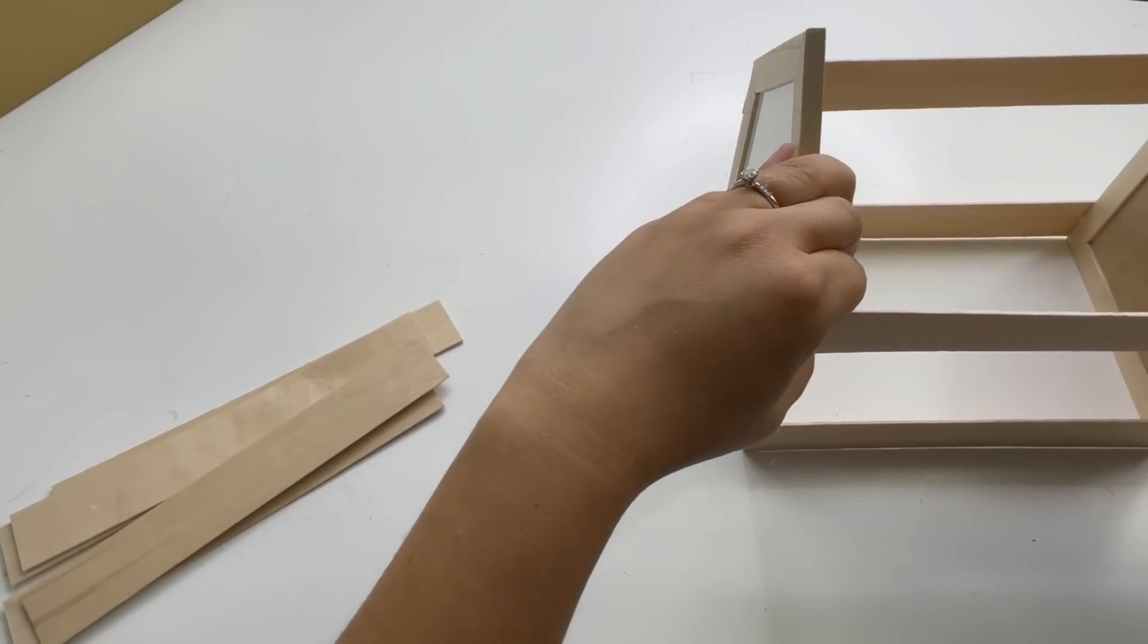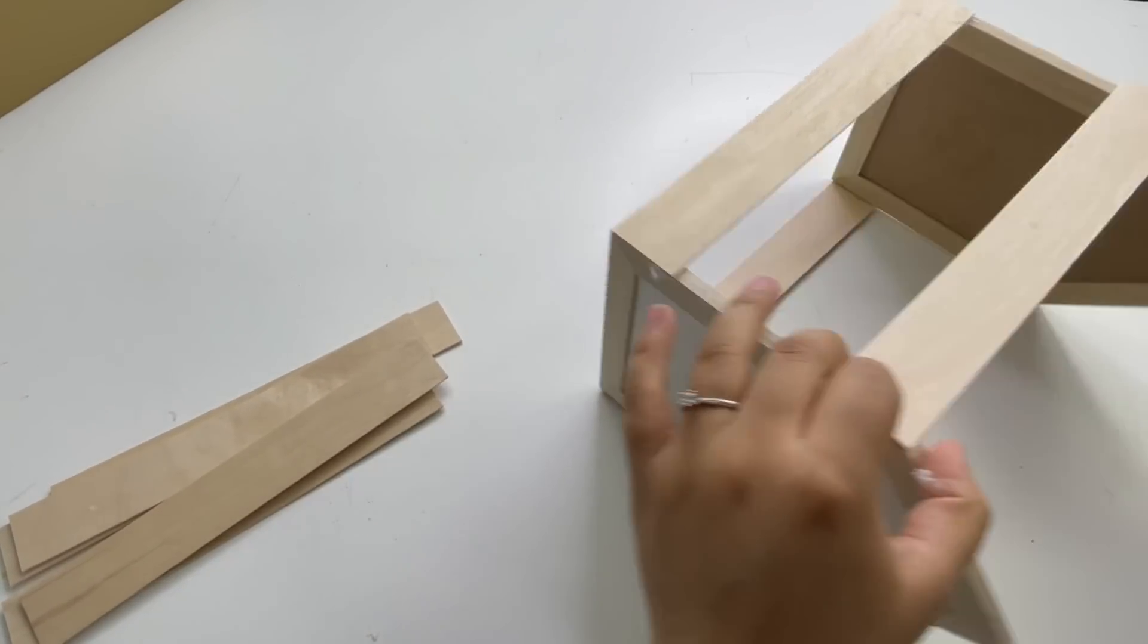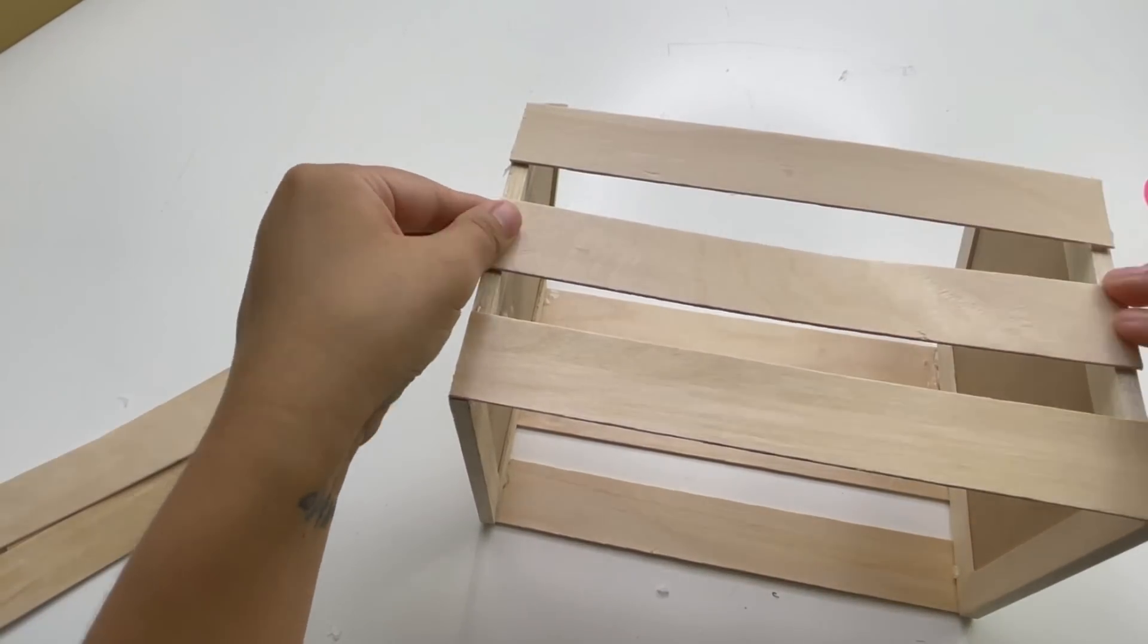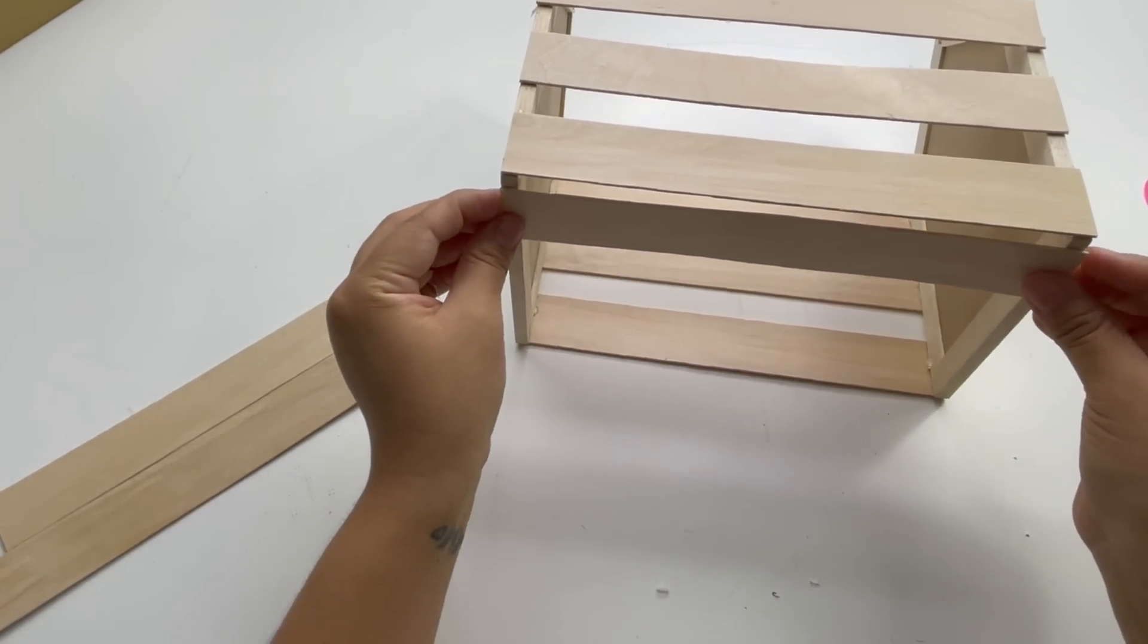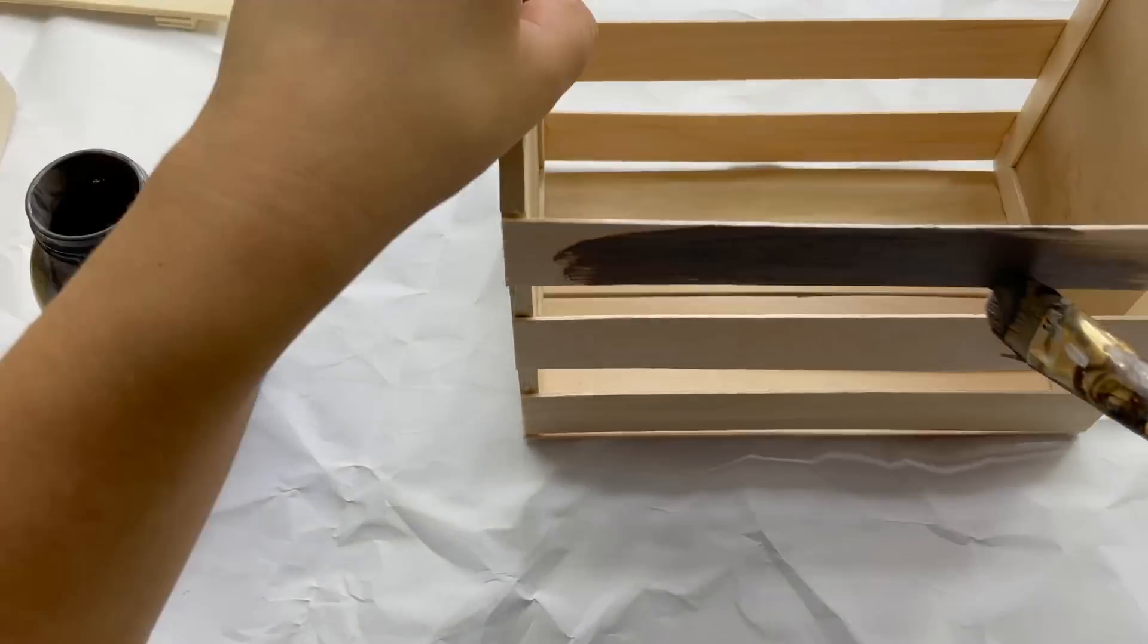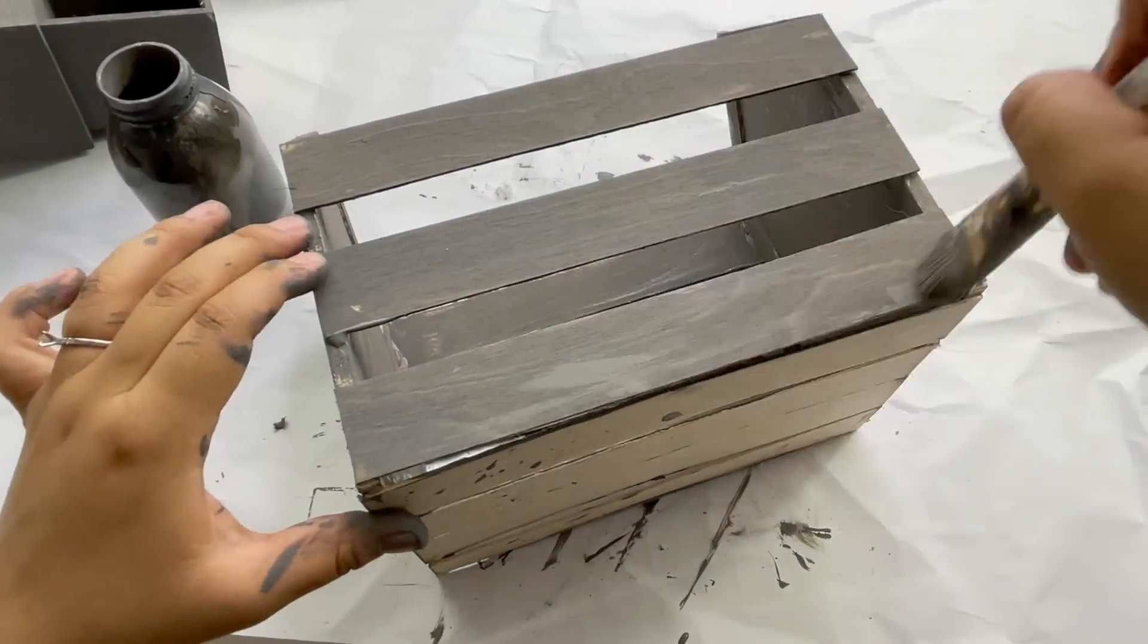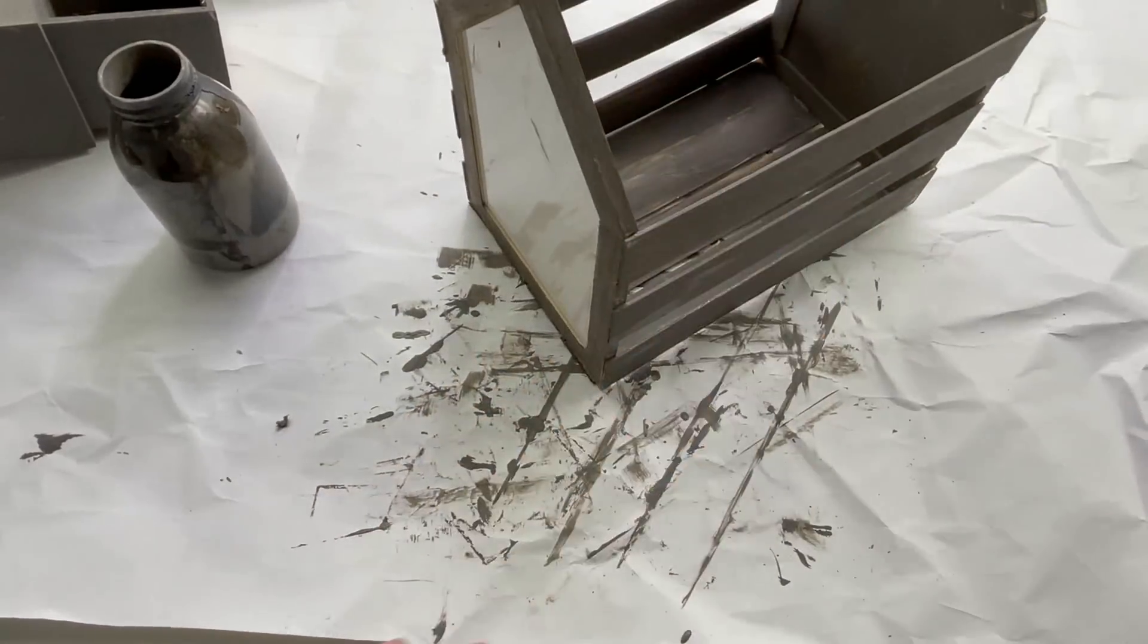And that is all I'm gonna be gluing. You can add like a little dowel at the top so this can be like a caddy, but instead I decided to just leave it like this. Once I was finished, I painted this and I used this little combination I made, which I'll have all the paints I used to make this color down in the description box.